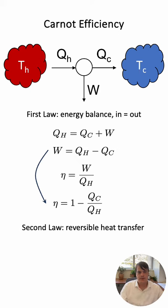Now we apply the second law and in doing so we are going to assume reversible heat transfer in which case the cold heat Q cold is T cold times delta S cold, the change in entropy of the cold reservoir.